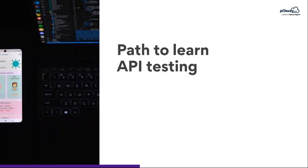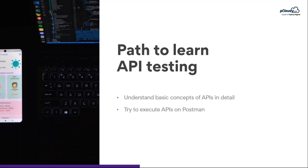The learning path for API testing: the first step is always theory — understand what is a GET API, POST API, HTTP request codes, and their characteristics. Then move to Postman. With APIs in hand, execute GET and POST APIs in Postman — where to select the method, how to pass parameters, whether it's a path parameter or query parameter, and whether a body is needed.